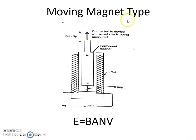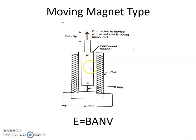In the moving magnet type, the magnet is moving. It consists of a permanent magnet as a core, which is movable. The permanent magnet is connected to the rod whose linear velocity is to be measured. Around this permanent magnet, the coils are wound. When the permanent magnet moves inside the coil, a voltage is induced in the coil.